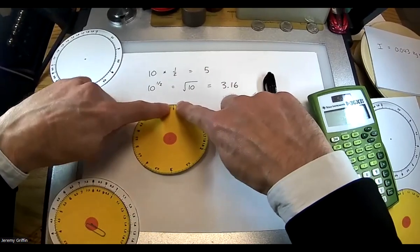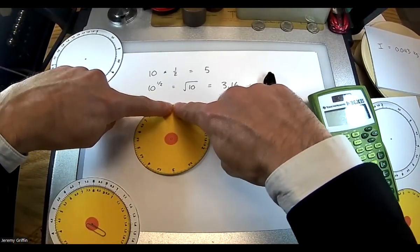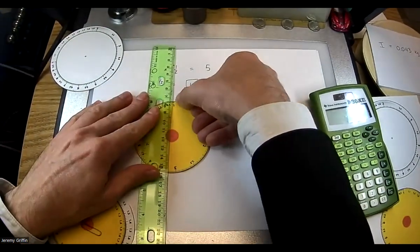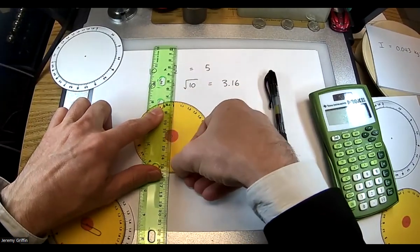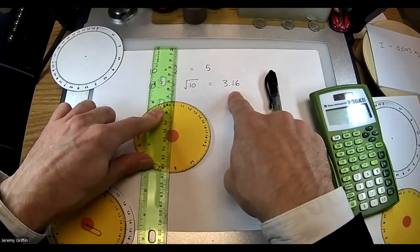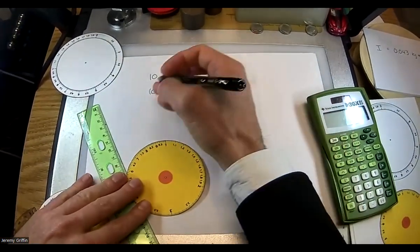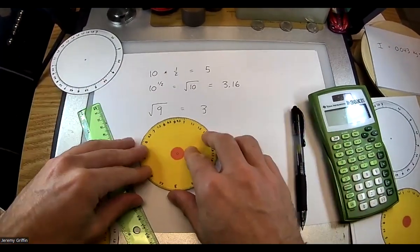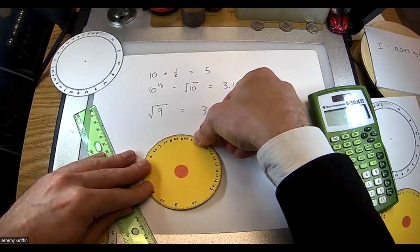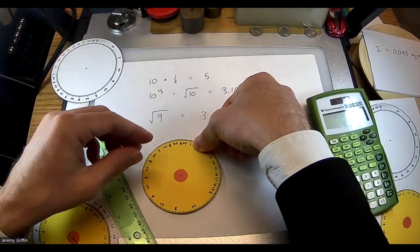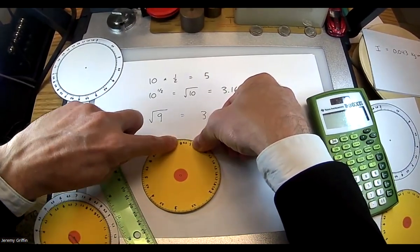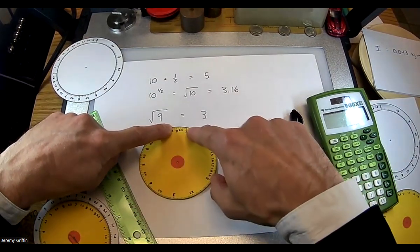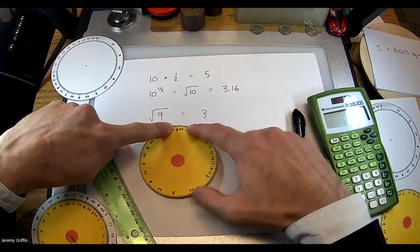What is half of 10 on the circle calculator? Put your finger on the 1, go halfway around — exactly 3.16. Now for square roots: the number 1 is home base. What's the square root of 9? It's 3, obviously. On the circle, 1 is home base, here's 9 — going halfway the long way between them lands exactly on 3. You can see that 3 is exactly dead halfway between 1 and 9.